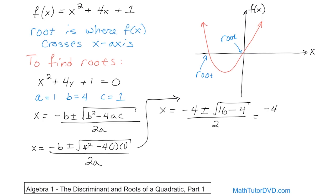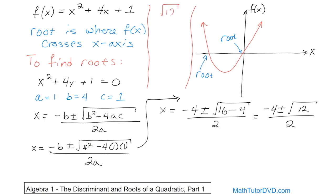Continuing to simplify: negative 4 plus or minus the square root of — what is 16 minus 4? That's just 12 — and then we have 2 on the bottom. So we need to figure out what the square root of 12 is. We have 3 times 4, and 4 is 2 times 2. Looking for pairs, a single 2 can come out and a square root of 3 is left behind. That is what the square root of 12 equals.